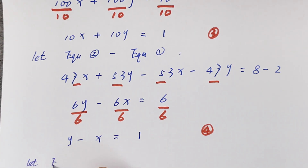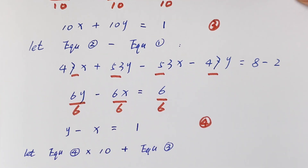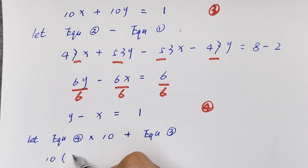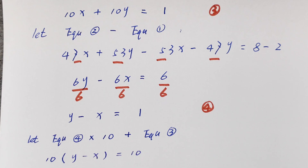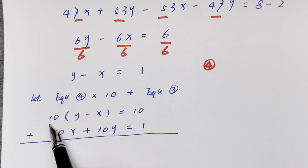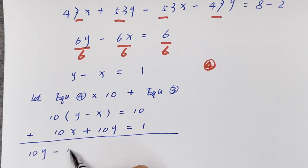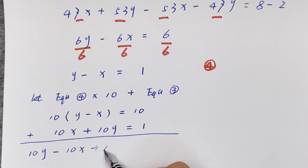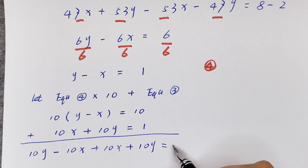Now we let equation 4 multiplied by 10, plus equation 3. 10 times (y minus x) equals 10, giving 10y minus 10x equals 10. And equation 3 is 10x plus 10y is equal to 1.